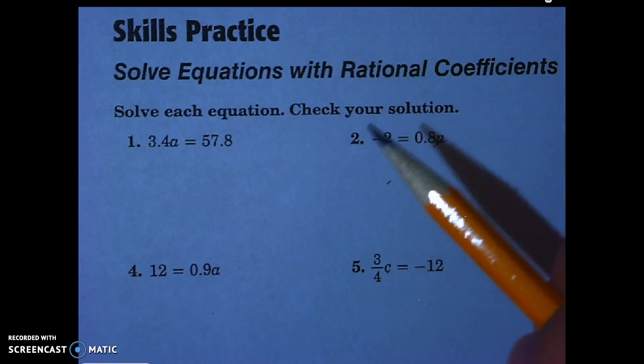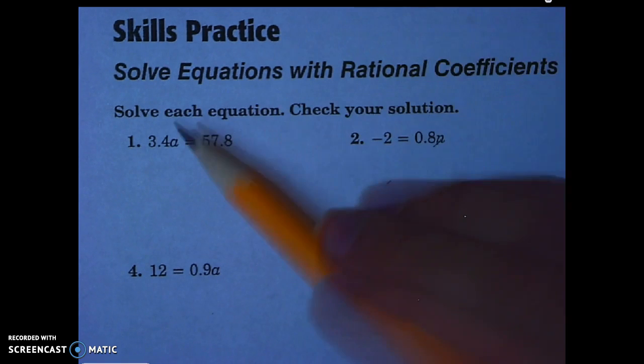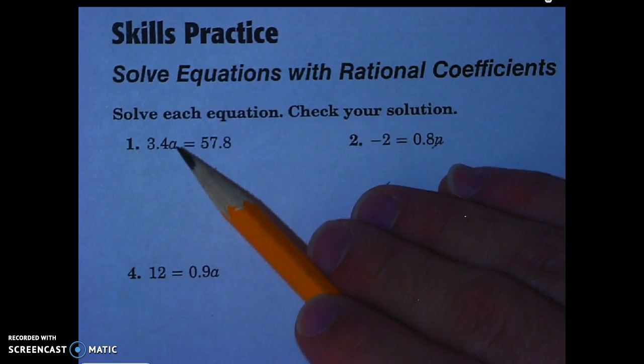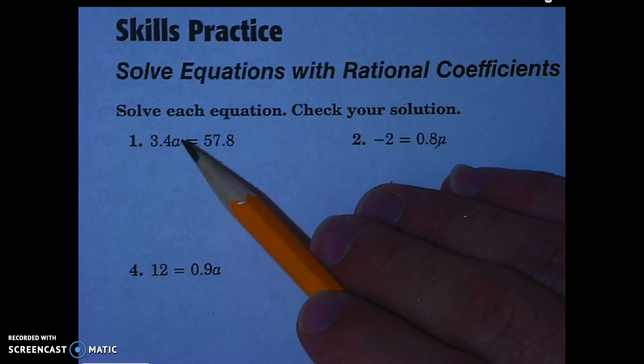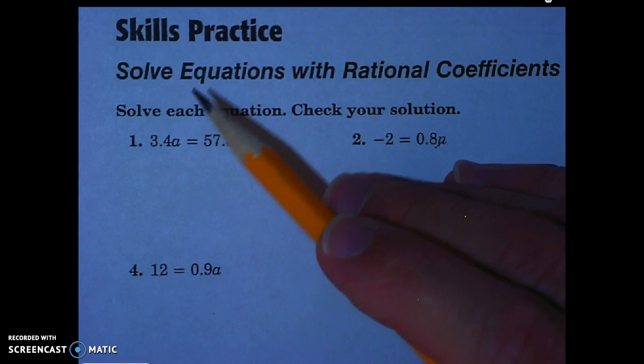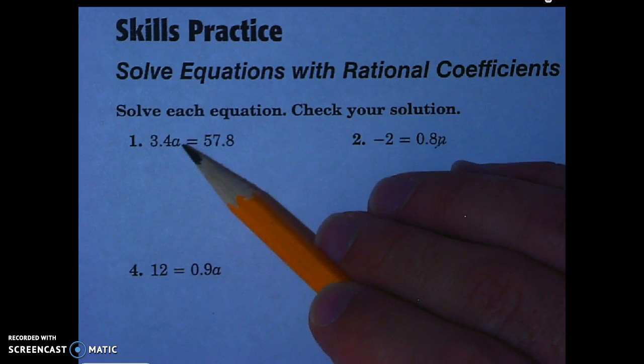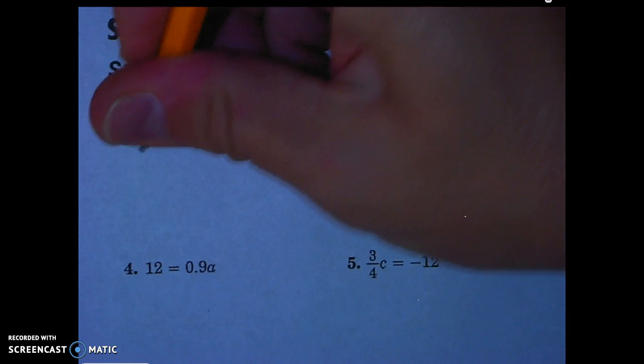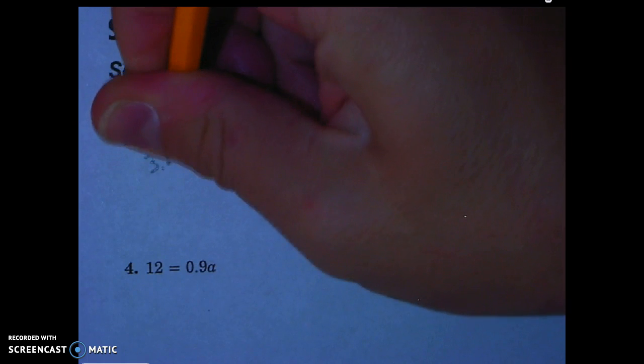We're going to start with number 1. On number 1, our variable is being multiplied by 3.4. Our main goal is to get our variable by itself, so we just do the opposite operation. Since my variable is being multiplied by 3.4, I will just divide by 3.4.